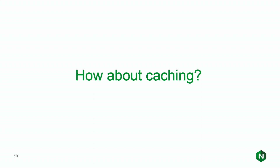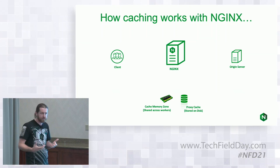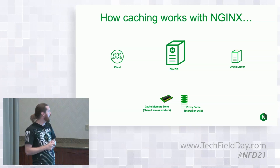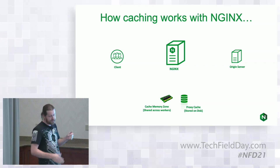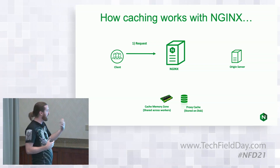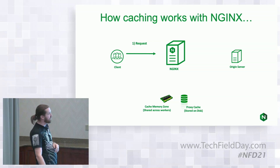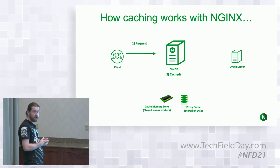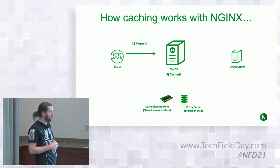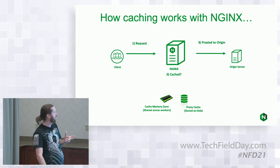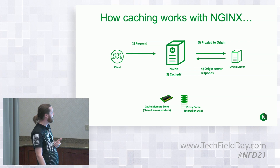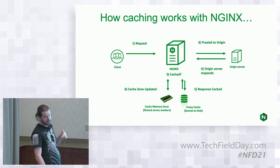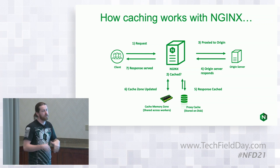Caching is one of the common use cases for Nginx — a lot of CDNs have built their entire caching platform on Nginx. It is a very efficient cache. The idea is a client comes in requesting some asset, it hits the proxy cache server — in this case Nginx. If caching is enabled, Nginx checks if the asset is cached in memory or on disk, and whether it's expired. If it can serve from cache, it does. If not, it proxies to an origin server. When the response comes back, it stores it on disk, updates the memory zone, and serves the response to the client so further requests for that asset are served from cache.